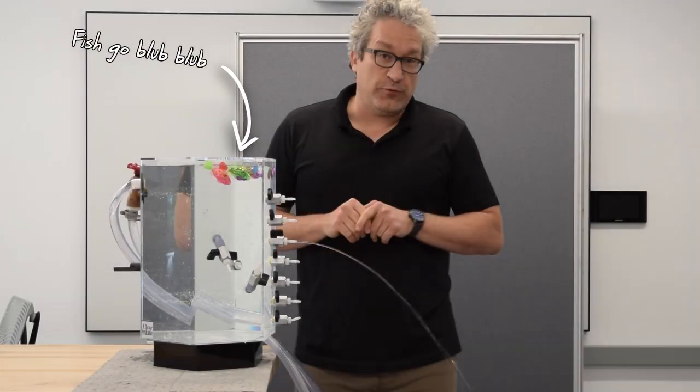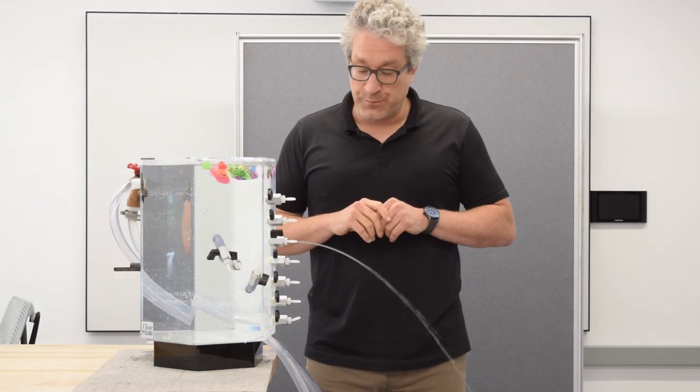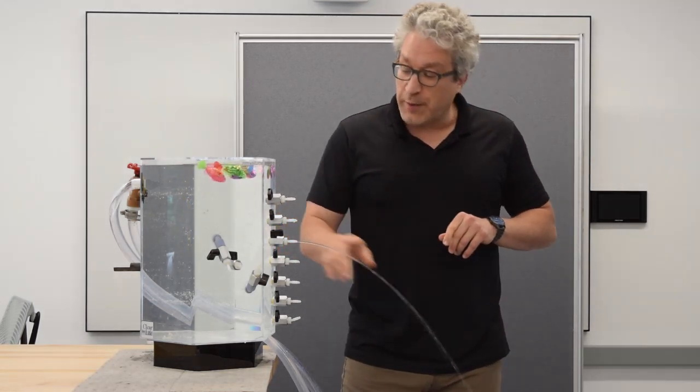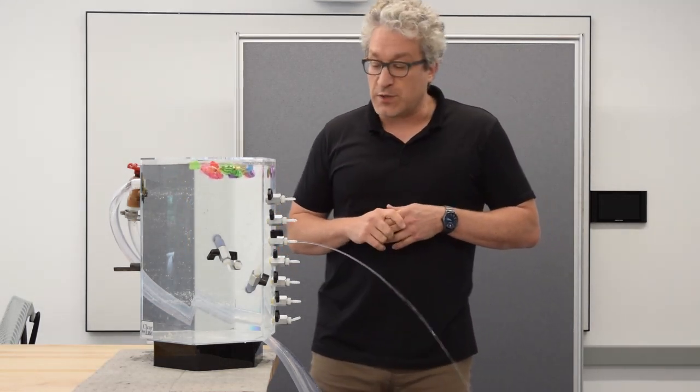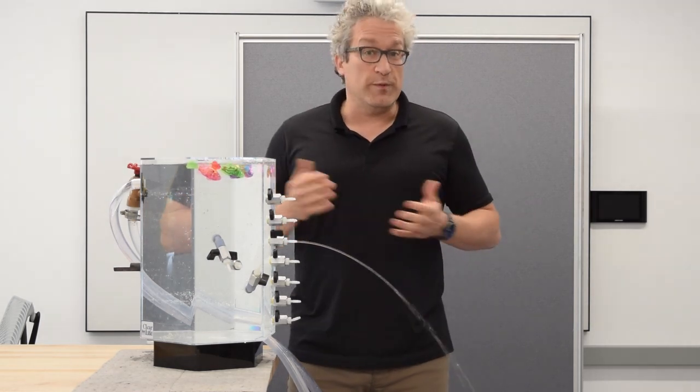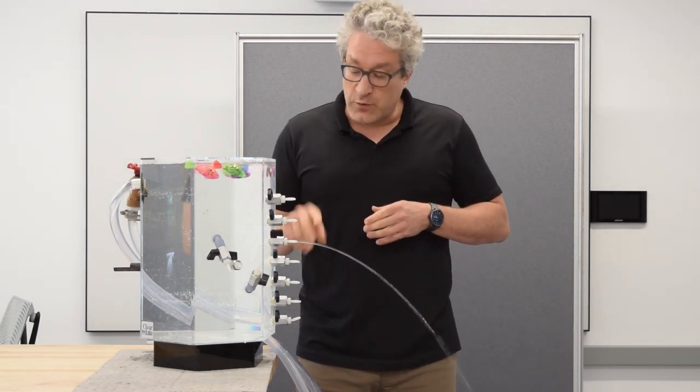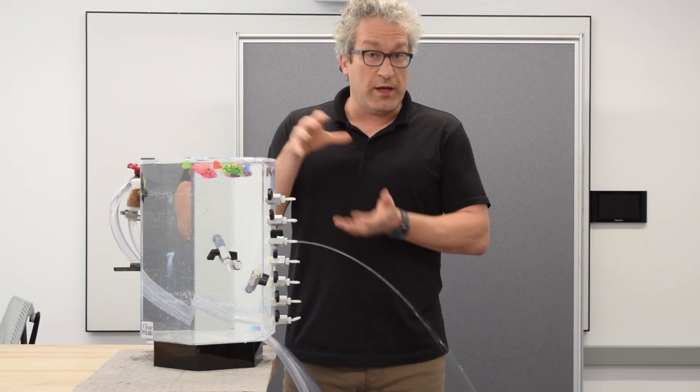We know this jet is a free jet for two reasons. First, it's following a parabolic path, which is the path that an object follows when it's accelerating only because of gravity. Second, the jet is neither expanding nor shrinking.